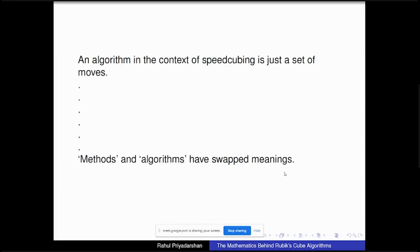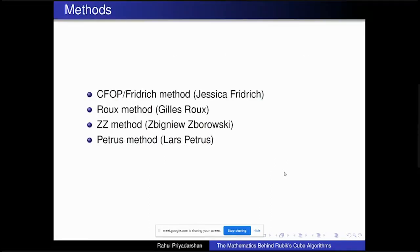The most popular methods used to solve the Rubik's cube include CFOP (the Friedrich method), which is the most popular and used by most world record holders, primarily because it has a good balance of intuition and algorithms. All four major methods are equally strong — if you're into speedcubing, any of these methods will help you become equally fast.